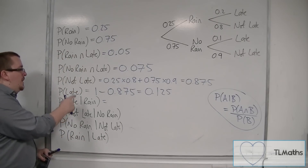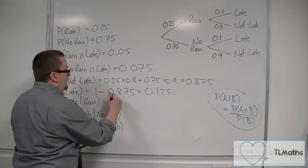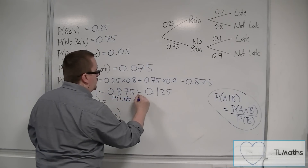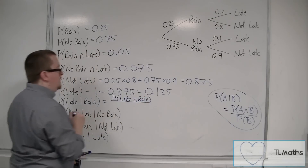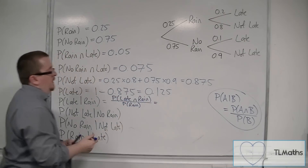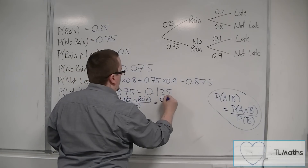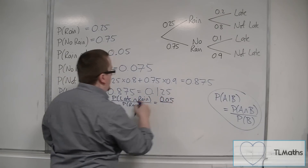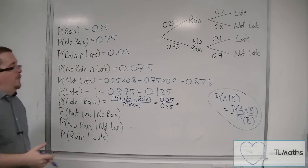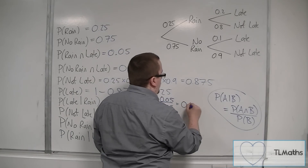The probability of someone being late given that it rained is the probability of the person being late and it having rained, divided by the probability of it raining. Late and rain we worked out — that was 0.05 — and the probability of it raining was 0.25. So 0.05 divided by 0.25 is 5 over 25, or one fifth: 0.2.